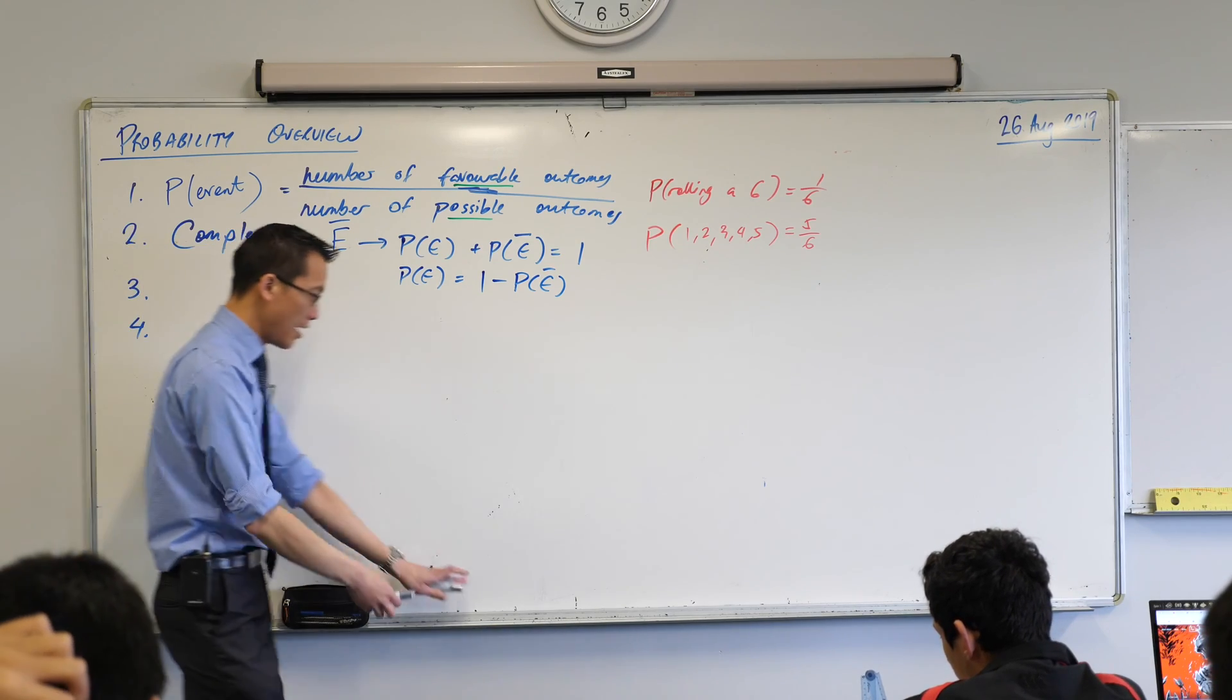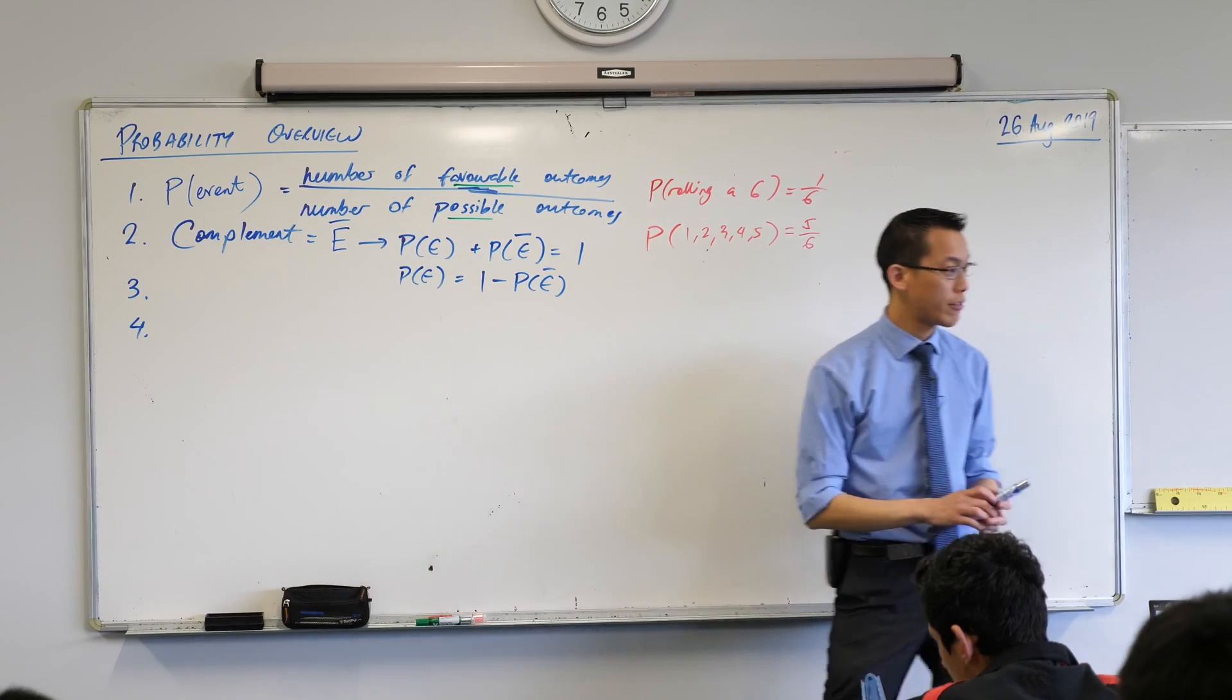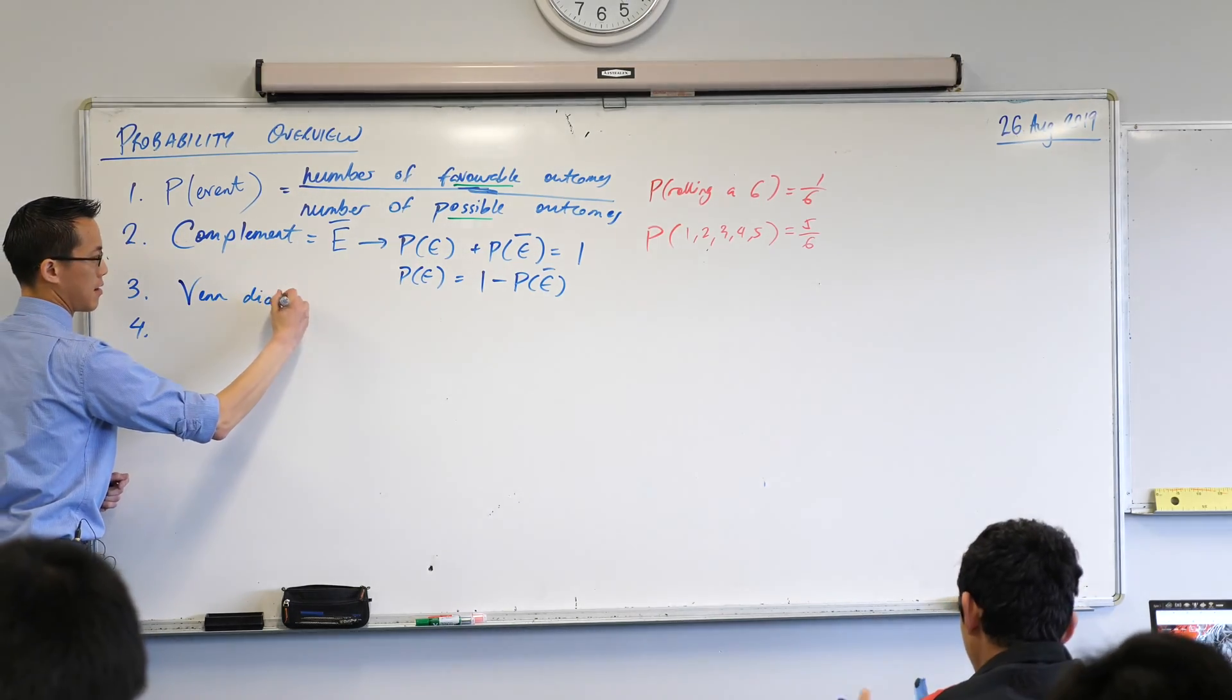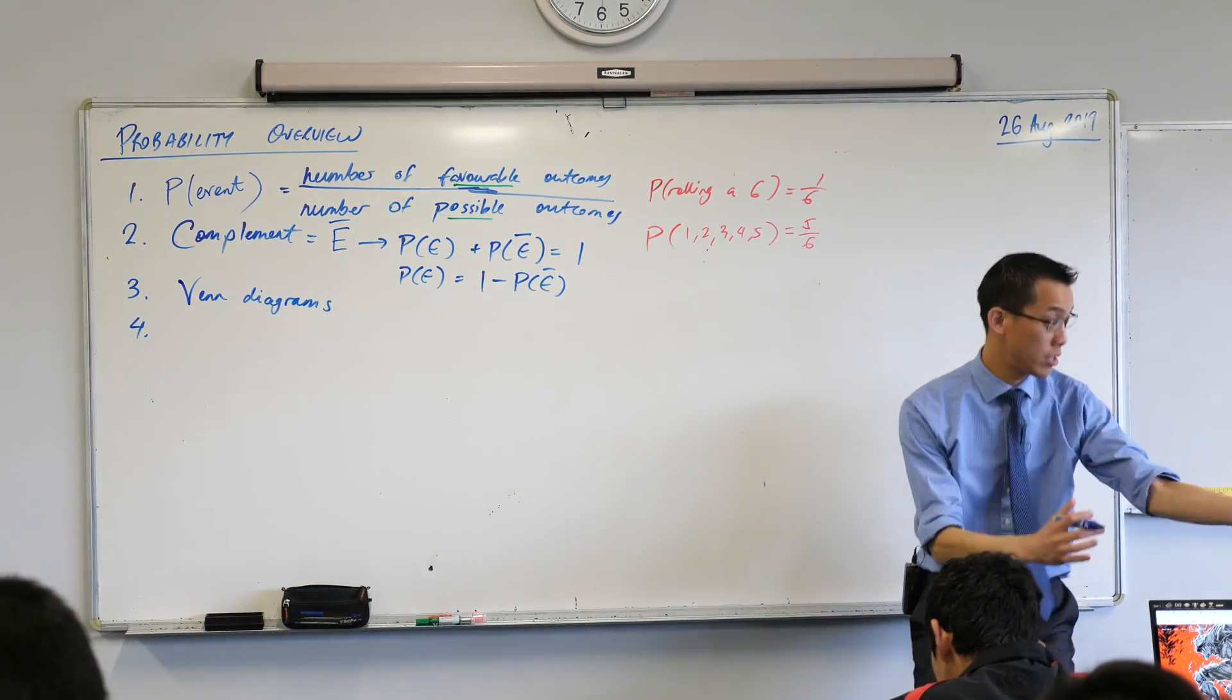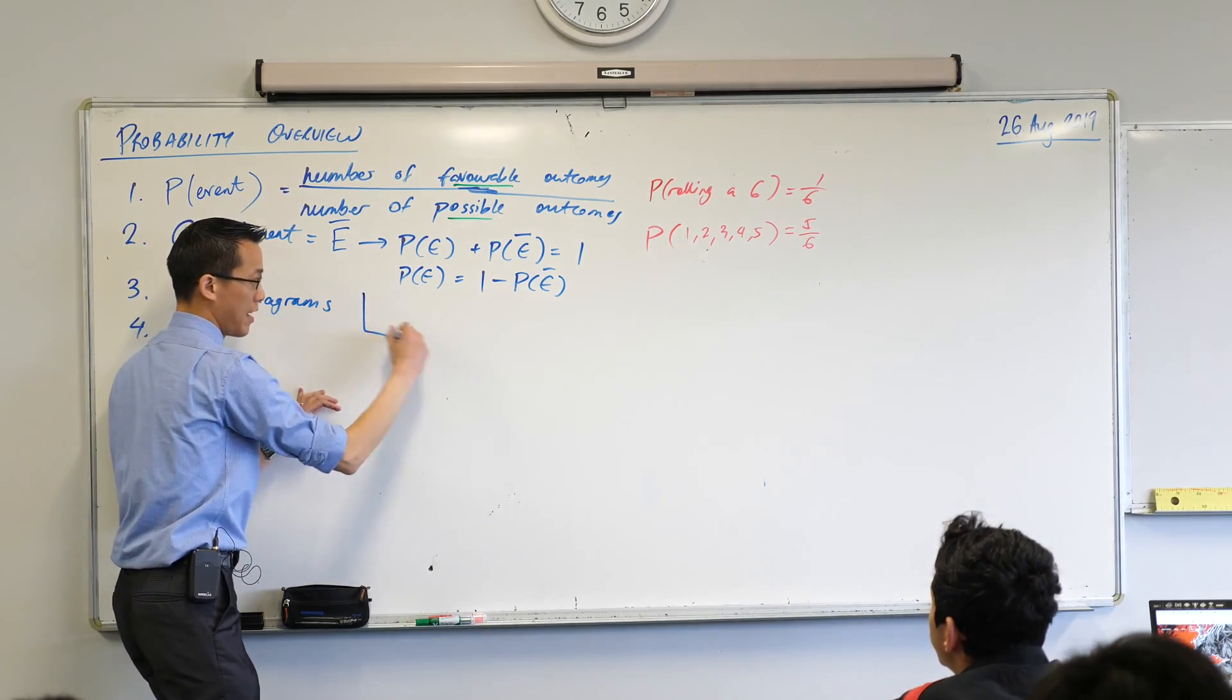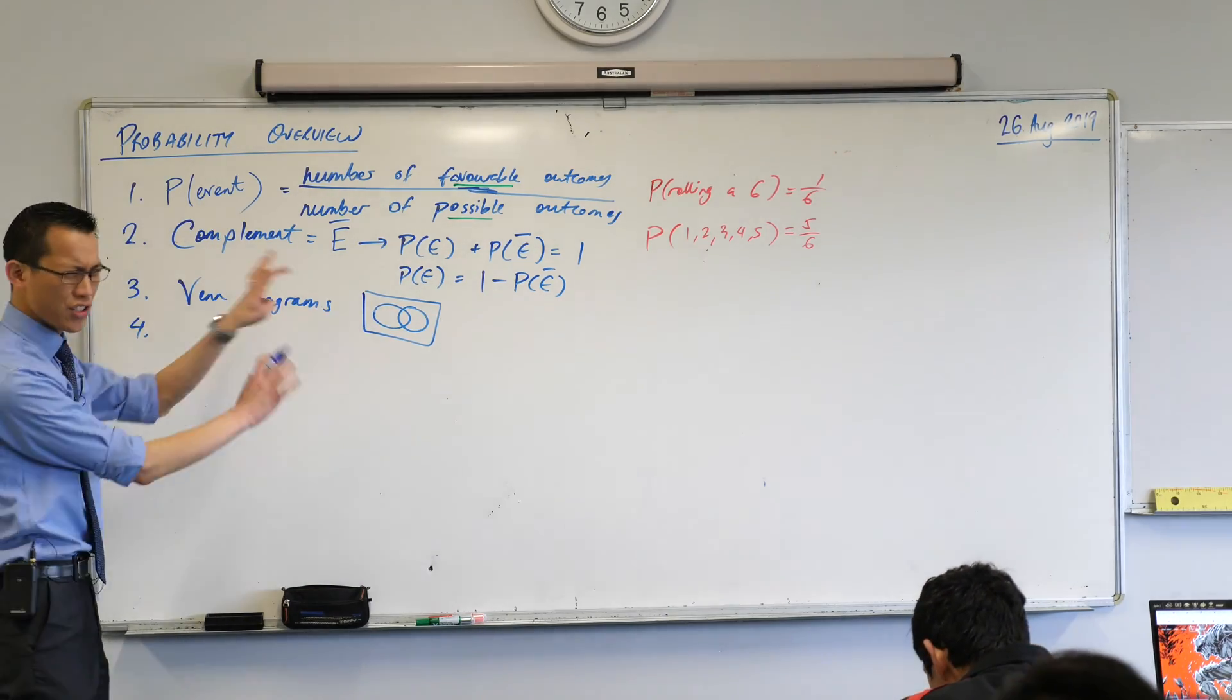Now to round this out, there were then two visual tools that we used to help us understand different situations in probability. They both required us to draw some diagrams. Does anyone remember what the first kind of diagram was? It was named after a guy. Venn diagrams, very good. Venn diagrams. When do we use Venn diagrams? When are they particularly useful? What do you think, Roshan? When there are two things that are overlapping, exactly right. So maybe in fact we might just draw a very small Venn diagram here just to give us a visual cue. So as Roshan said, that's perfect. There you go. Two things that are overlapping.